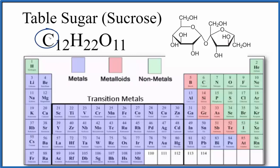So we first look at carbon. We have 12 carbons. Carbon's a nonmetal. Hydrogen, we have 22 of those. Hydrogen, that's a nonmetal as well.